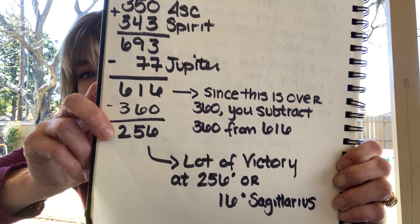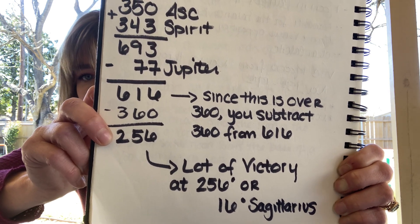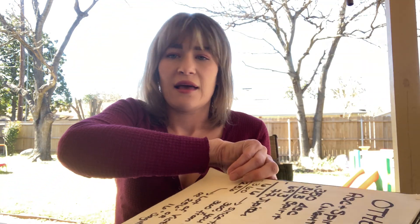256 translates to 16 degrees Sagittarius. I will post the first picture I showed with the formulas, and post a link to that. I will also post a link to this picture I just showed you, so in case you wind up with a number that is bigger than 360, you'll know what to do. And I'll also post a link to a picture of the 360-degree Zodiac.